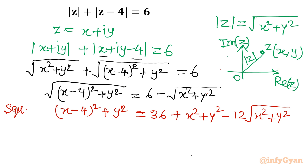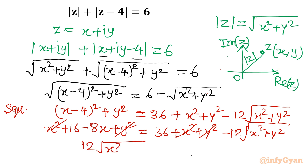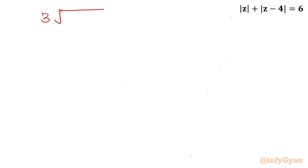Let's expand x minus 4 whole squared: x squared plus 16 minus 8x plus y squared equals 36 plus x squared plus y squared minus 12 times square root of x squared plus y squared. Now I will immediately cancel x squared plus y squared from both sides and bring the square root term to the left. So 12 times square root of x squared plus y squared equals 8x plus 36 minus 16, which is 20. Dividing everything by 4 gives: 3 times square root of x squared plus y squared equal to 2x plus 5.